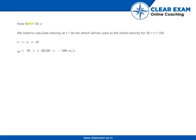Now for t > 30 s, we need to calculate velocity at t = 30 s, which will be used as the initial velocity for 30 s < t < 100 s.